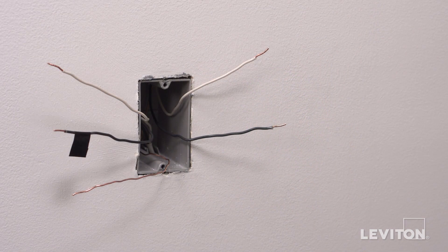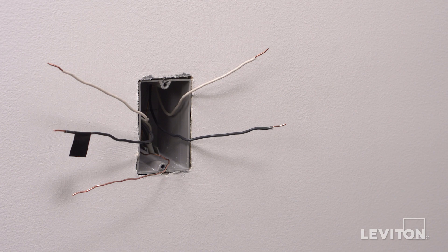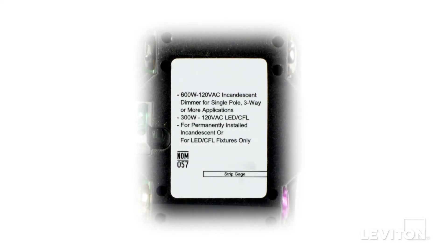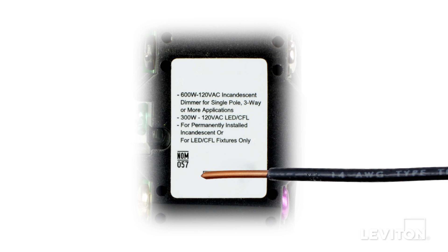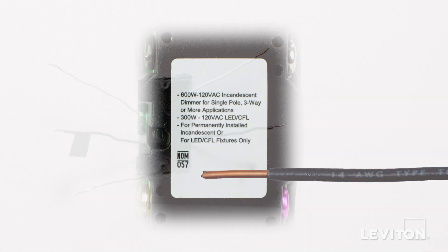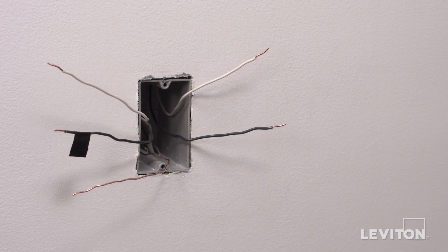Next, you need to be sure that the wires are prepared for installation. Start by making sure the wires are straight and stripped according to the strip gauge located on the back of the device. If not done so already, separate the white neutral wires.